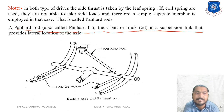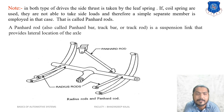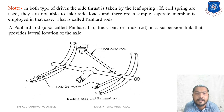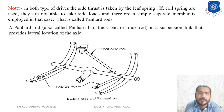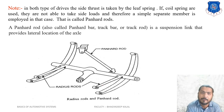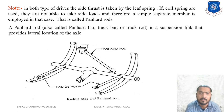The pan hard bar is also called a track bar or track rod — it is a crossbar used in suspension. Radius rods are also provided parallel to the longitudinal axis to compensate for torque reaction. So the function of the pan hard bar is to bear side thrust, and the function of the radius rod is to compensate for torque reaction — these are important points for MCQ exams.